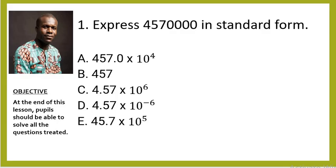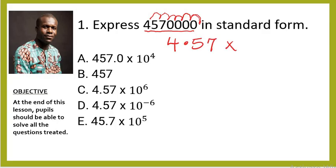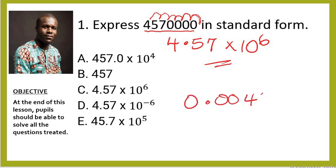Question number one: express 457,000 in standard form. Standard form is simply a shortened form of expressing a large number. We count from the beginning until we get to the last digit: one, two, three, four, five, six — I counted six times. So we have 4.57 times 10 raised to power 6. Since I counted to the left, the power is positive 6. The right answer is 4.57 × 10⁶, which is option C.